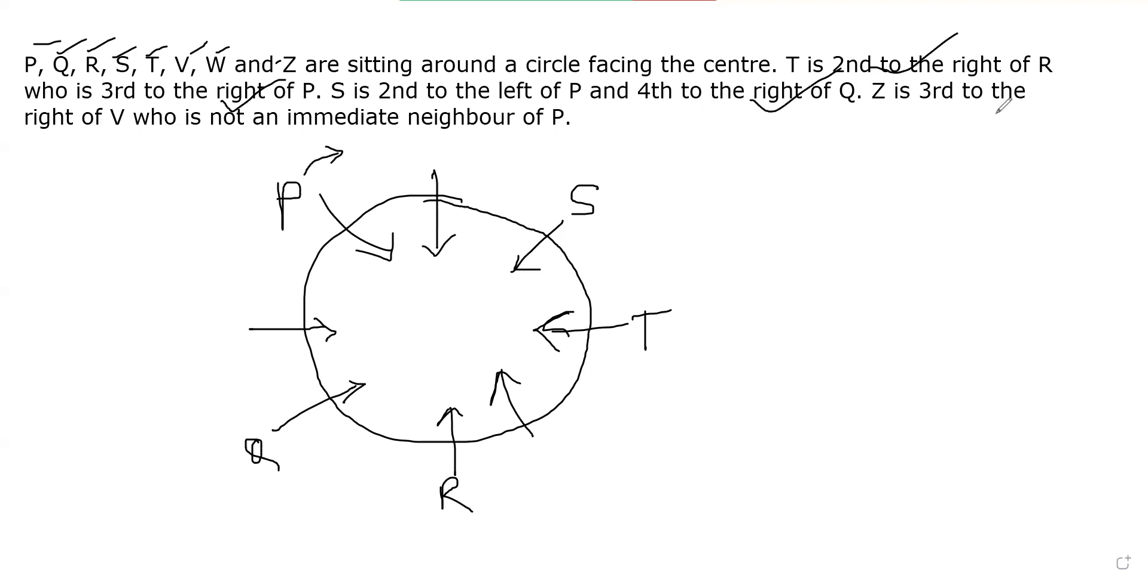Z is third to the right of V who is not the immediate neighbor of P. So V is not immediate neighbor. So V here not possible. V here also not possible. So V is here and Z is third to the right of V. So third to the right of V, Z. So Z is here. So I'm removing this one, this one, and drawing Z here.